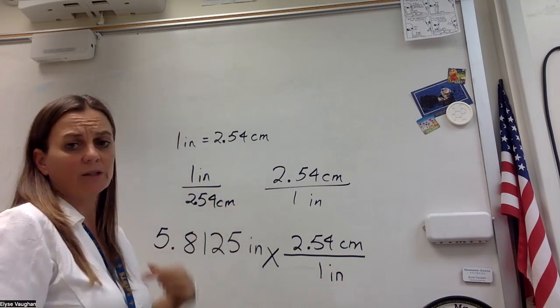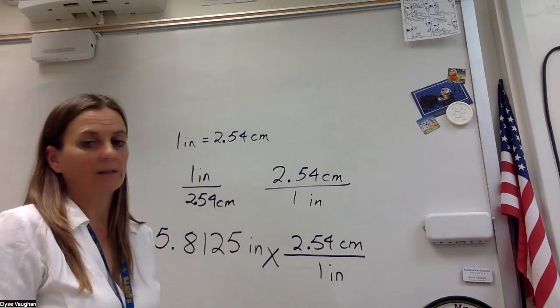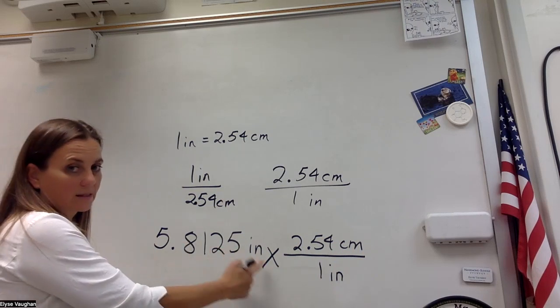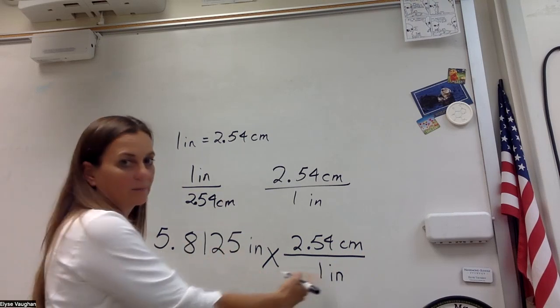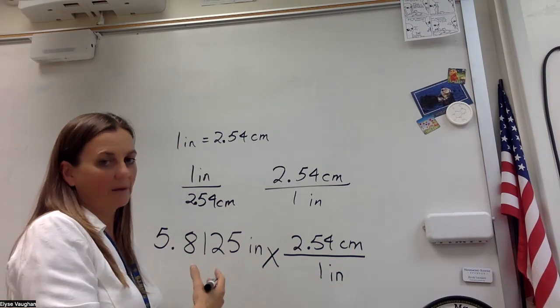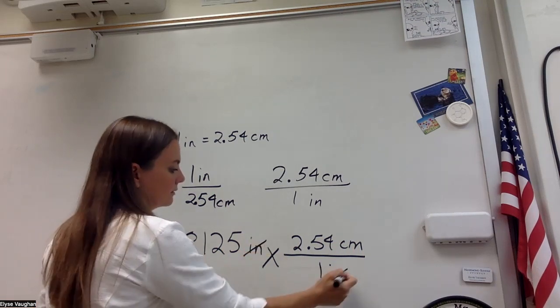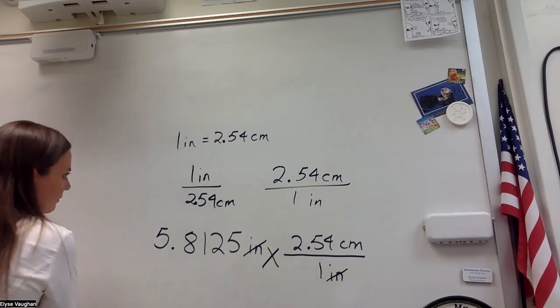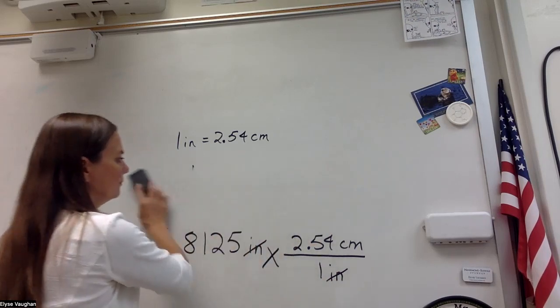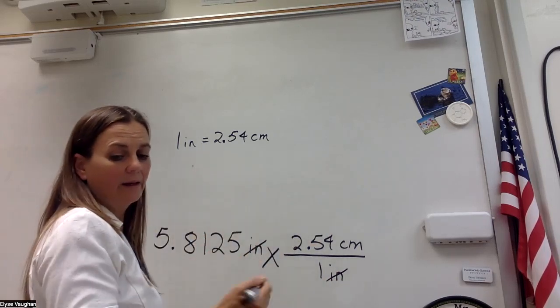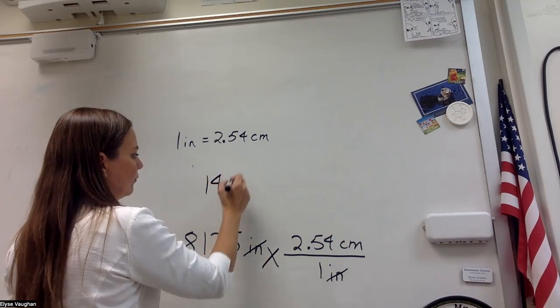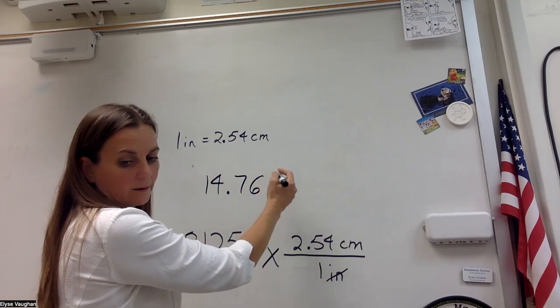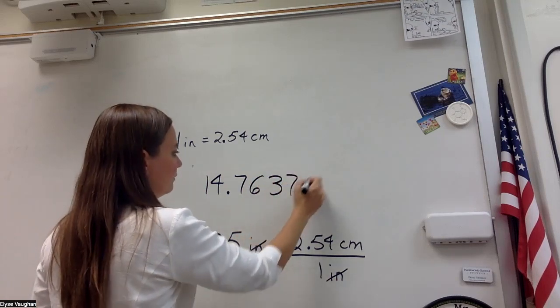And both these fractions really just equal one because we have the same thing on the top and the bottom, just in different units. So now we can see that I'm going to have inches on the top and inches on the bottom. And just like any variable, if I have it on the top and the bottom, it's going to cancel out. And so I'm going to be left with units of centimeters. And so when we do the math from this problem, we get that the answer is 14.76375.